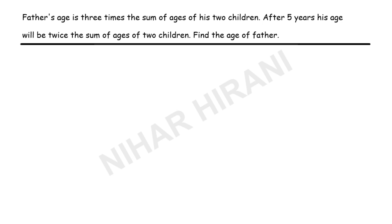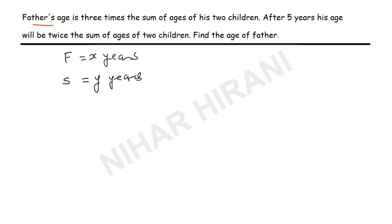First, we suppose that the age of the father equals x years, and the sum of the ages of his two children equals y years. Now let's deal with statement one: the father's age is three times the sum of the ages of his two children.